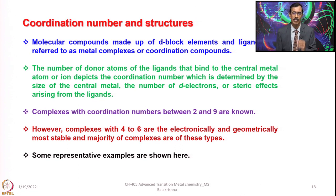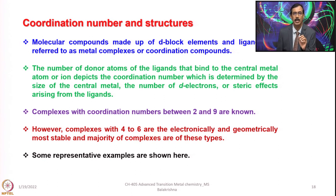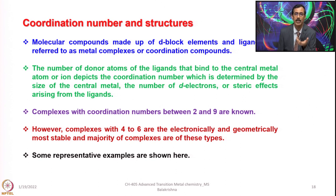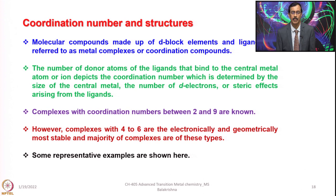The ligands can be a group of atoms, a single atom, or an ion which should have a pair of electrons that can be readily donated. The number of donor atoms of the ligands that bind to the central metal atom or ion depicts the coordination number. This is determined by the size of the central metal, the number of D electrons, or steric effects arising from the ligands — all these factors are very important when we talk about coordination compounds.